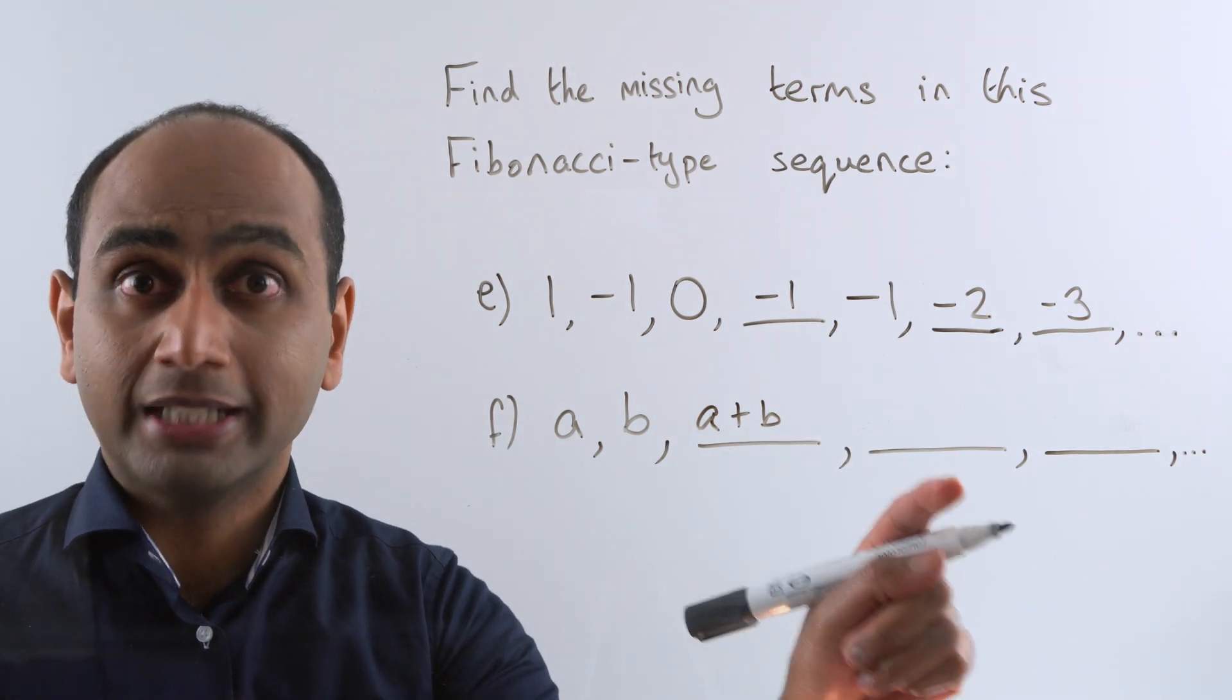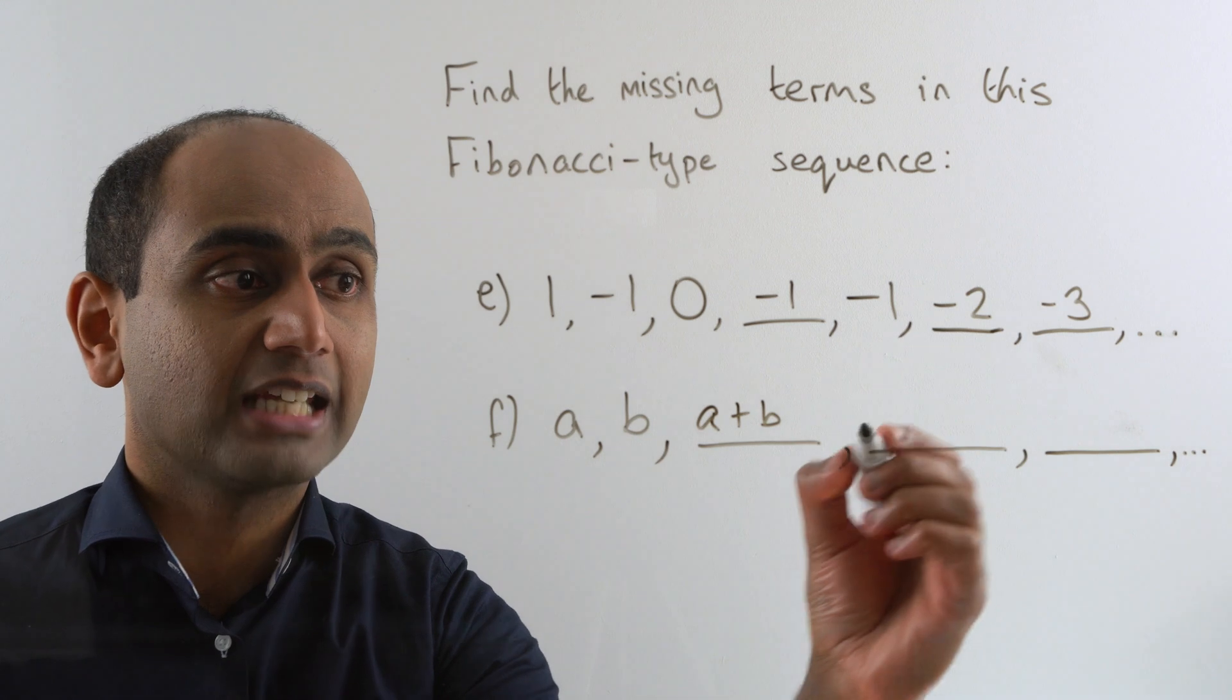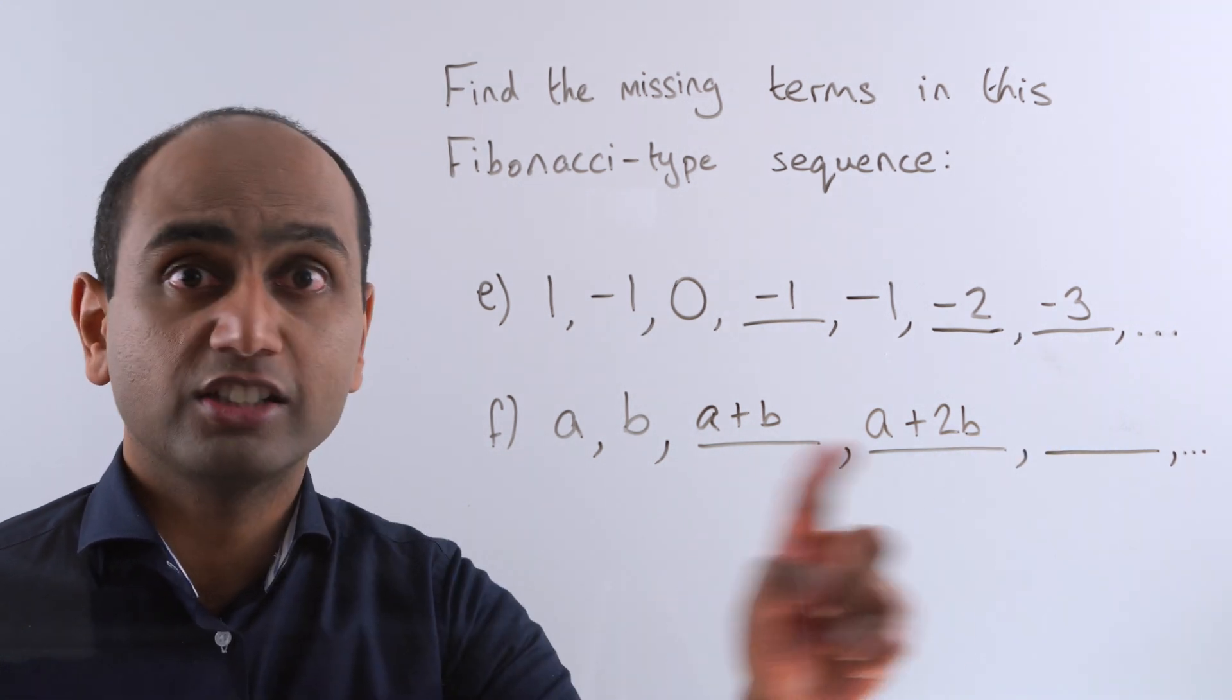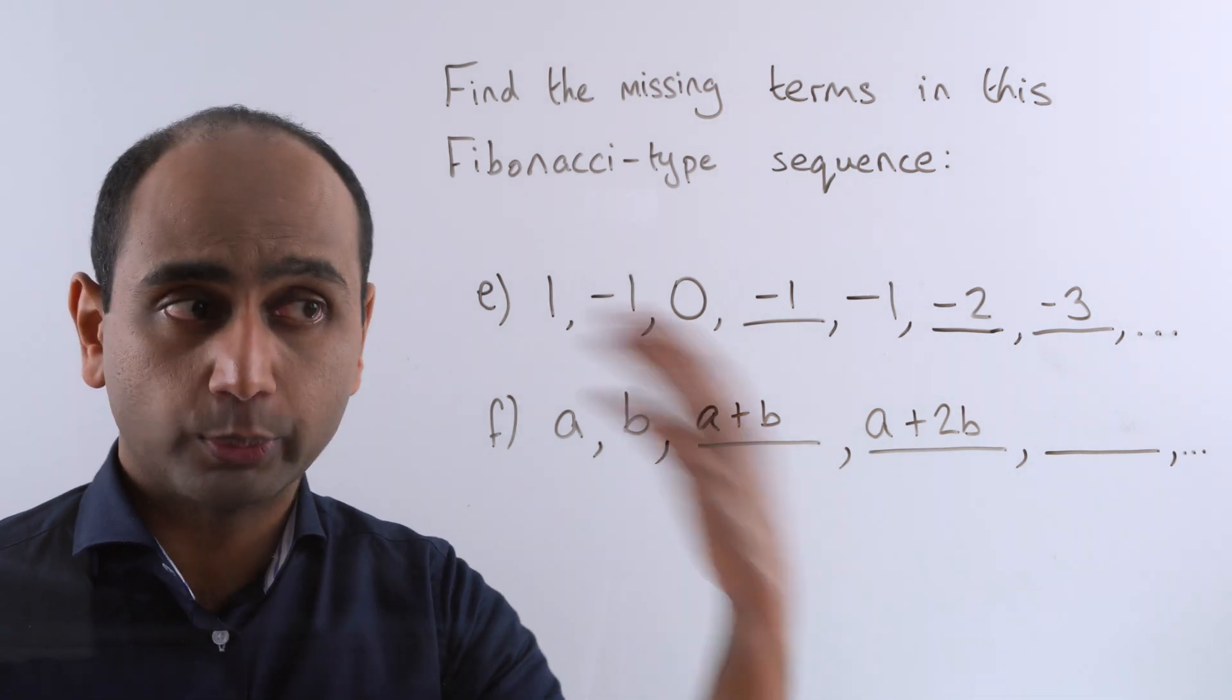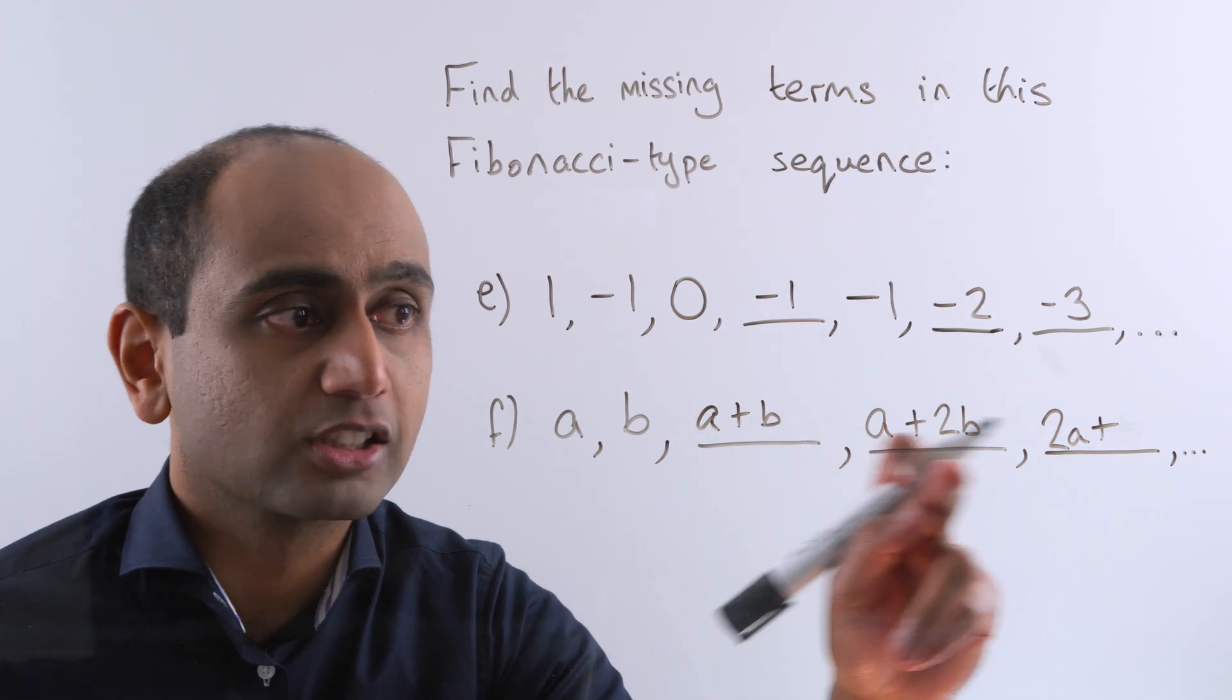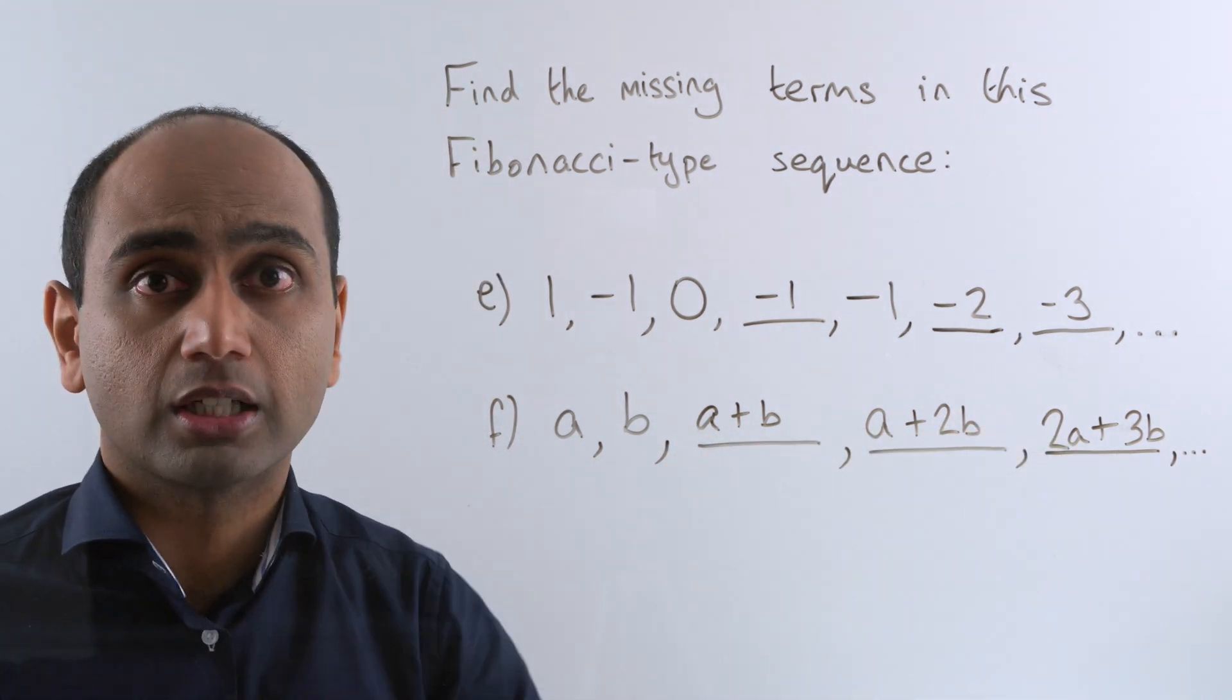The next term, this one here, is found by adding these two together. So we've got B plus A plus B. Now B plus A plus B is the same as A plus 2B. And this term here is found by adding these two together. So we've got A plus B plus A plus 2B. And if we collect the like terms we've got 2A plus B plus two more B, so that's plus 3B altogether. So those are the next three terms in this Fibonacci type sequence.